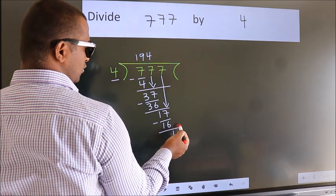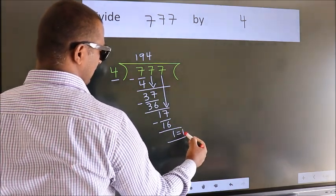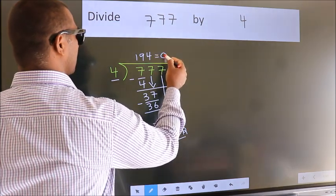No more numbers to bring down. So we stop here. This is our remainder. This is our quotient.